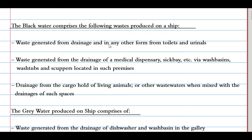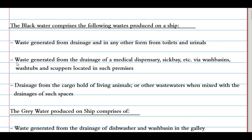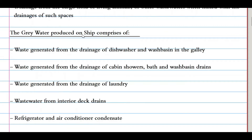Black water also includes drainage via washbasins, wash tubs, and scuppers located in medical premises, as well as drainage from cargo holds carrying live animals, or other wastewaters when mixed with drainage from such places. Annex 4 gives requirements and measures for black water only, not for gray water.